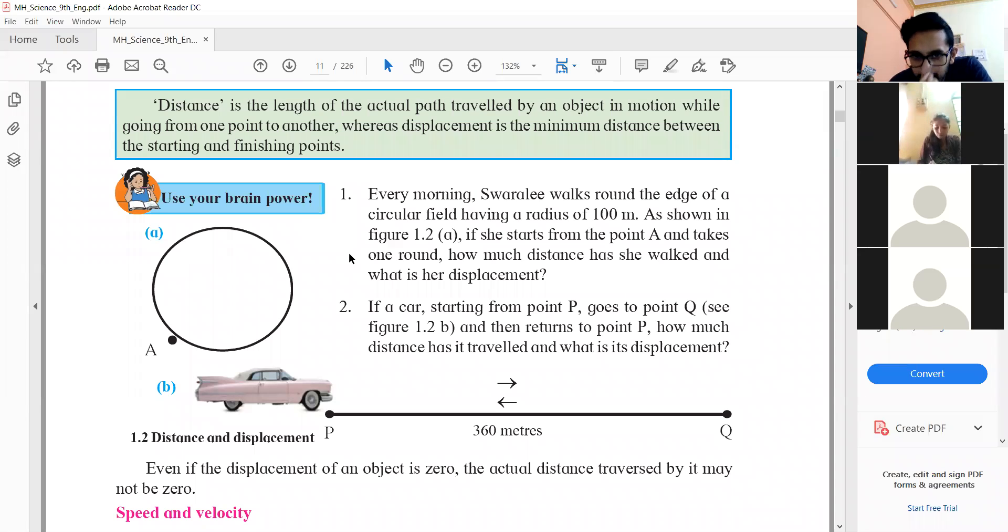So again the same question, if a car is starting from point P, goes to point Q and then returns to point P, how much distance it has travelled and what is the displacement? Again, the displacement will be? Zero. Very good.